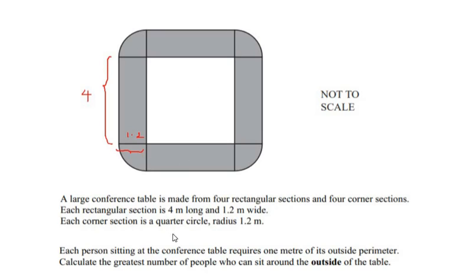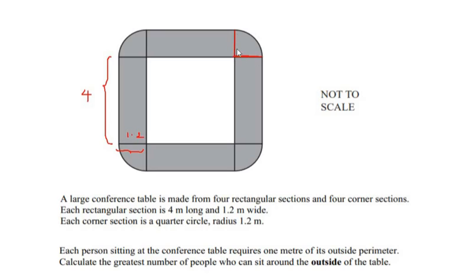Each corner section is a quarter circle with radius 1.2 meters. A quarter circle is just one-fourth of an entire circle — if you draw a complete circle, each corner represents only one quarter of it.